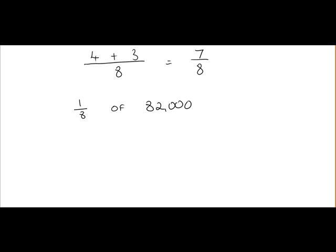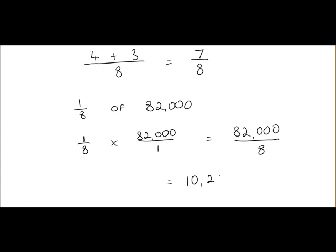So we need to find one-eighth of 82,000. The way to find one-eighth of that is to multiply one over eight by 82,000 over one. That's equal to 82,000 divided by eight. When you put that into the calculator, you should get 10,250. So that means 10,250 of the attendance were from other counties, i.e. counties other than Tipperary and Kilkenny.